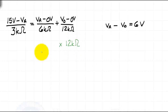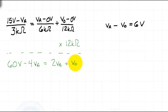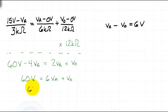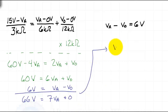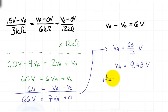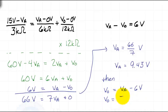Now we have an algebra problem. If we take these two equations and simplify the first by multiplying through by 12 kilohms, we get 60 volts minus 4 VA equals 2 VA plus VO. Rearranging gives 60 volts equals 6 times VA minus VO. With a linear system of equations, we can eliminate variables by adding the equations together. Adding the two equations, we get 66 volts equals 7 VA, which gives VA equal to 9.43 volts. Then, since VA minus VO is 6 volts, we solve for VO, which equals 3.43 volts.